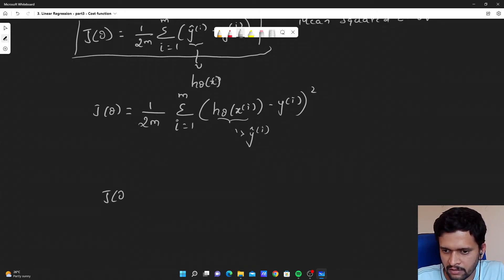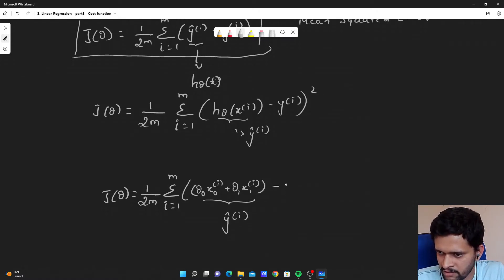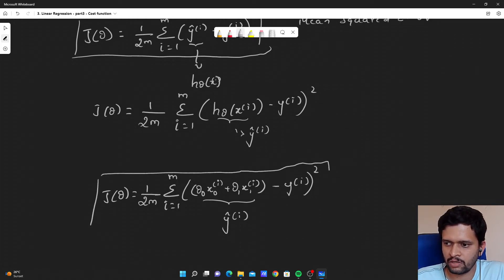If I substitute the equation for our hypothesis, the cost function will be j theta is equal to 1 by 2m, summation of i is equal to 1 to m. Our hypothesis is theta 0 x 0 of i training example plus theta 1 x 1 of i training example. This is our hypothesis also called as predicted value, y hat of i minus y i, which is our actual value, square of the difference. This is our actual cost function for univariate linear regression.